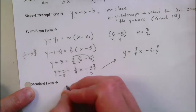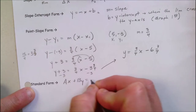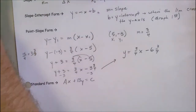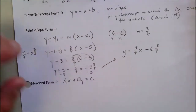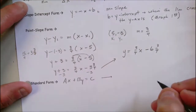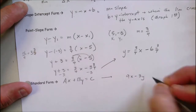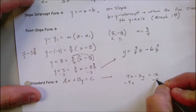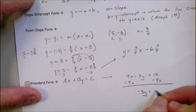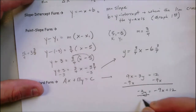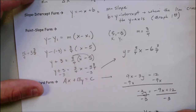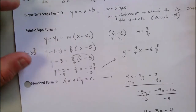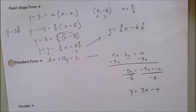Standard form is ax plus by equals c. If an equation is given to you like 9x minus 3y equals 12, that's standard form, but it's not super user-friendly. You can type it into Desmos, but here's what I'll do: I'll subtract 9x from both sides, then divide through by negative 3, and you get the equation in slope-intercept form. You can double-check by plugging both into Desmos to confirm they're the same line.